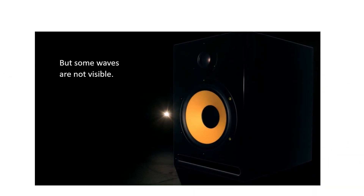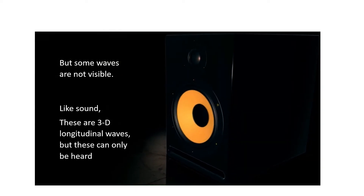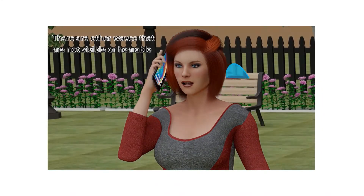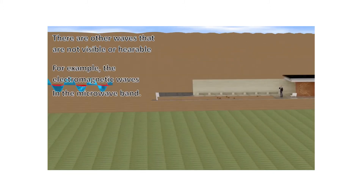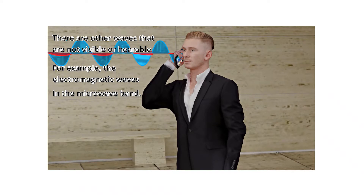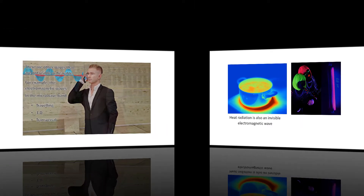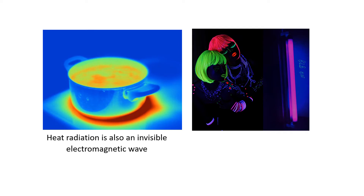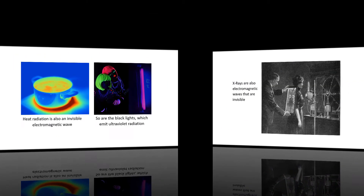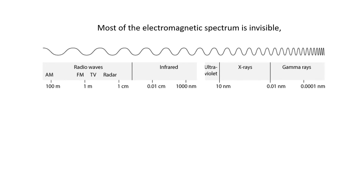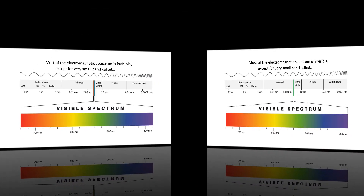Some waves are not visible, like sound — three-dimensional longitudinal waves that can only be heard. There are also waves that are neither visible nor audible, like electromagnetic waves in the microwave band: traveling, 3D, and transversal. Heat radiation is also an invisible electromagnetic wave, as are black lights emitting ultraviolet radiation and x-rays. Most of the electromagnetic spectrum is invisible except for the narrow visible band.